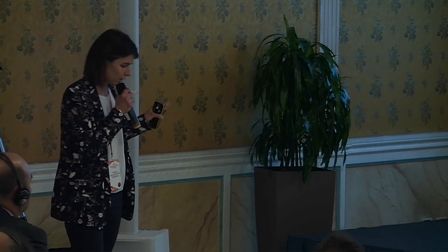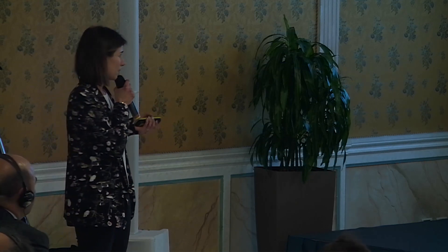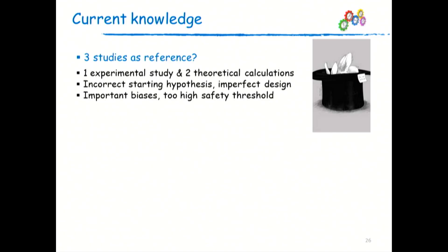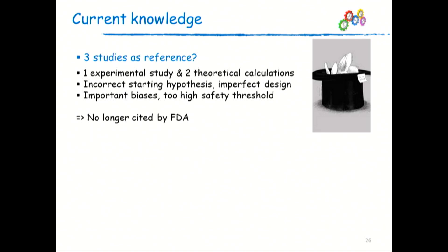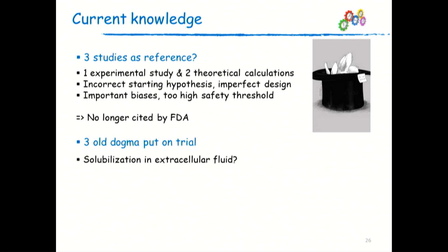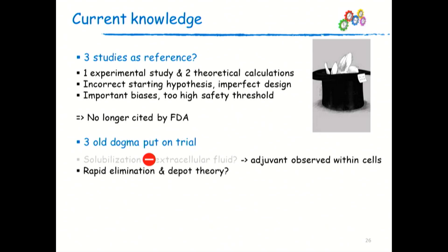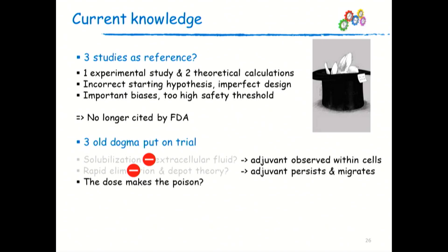To conclude on this point: we have three studies used as reference — one experimental, two theoretical — with incorrect starting hypotheses, imperfect design, important biases, and too-high safety thresholds. The last one is no longer cited by the FDA. And finally, the three old reassuring dogmas are now challenged by current knowledge: solubilization in extracellular fluid is challenged because adjuvants are found within cells; rapid elimination and the depot theory are challenged because adjuvants can persist and migrate; and the idea that 'the dose makes the poison' is challenged, which can depend mainly on the size of the particles.